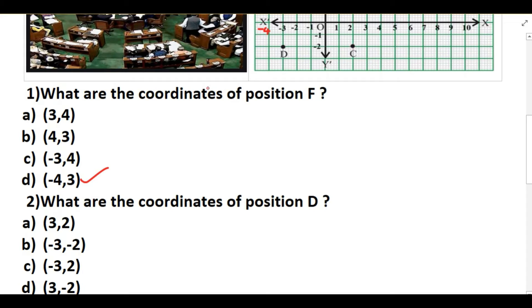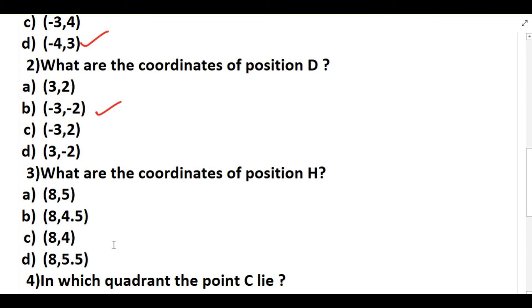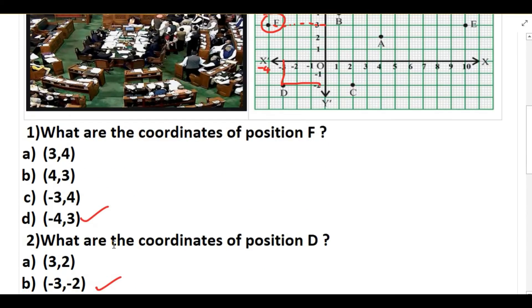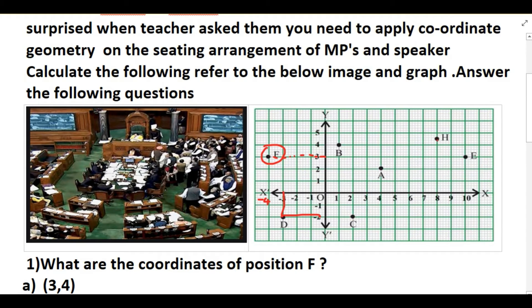So here -3 and -2. First again you should write x coordinate -3 and -2. Now the third question, what are the coordinates of position H? So H is here, we need to find the coordinates of position H.